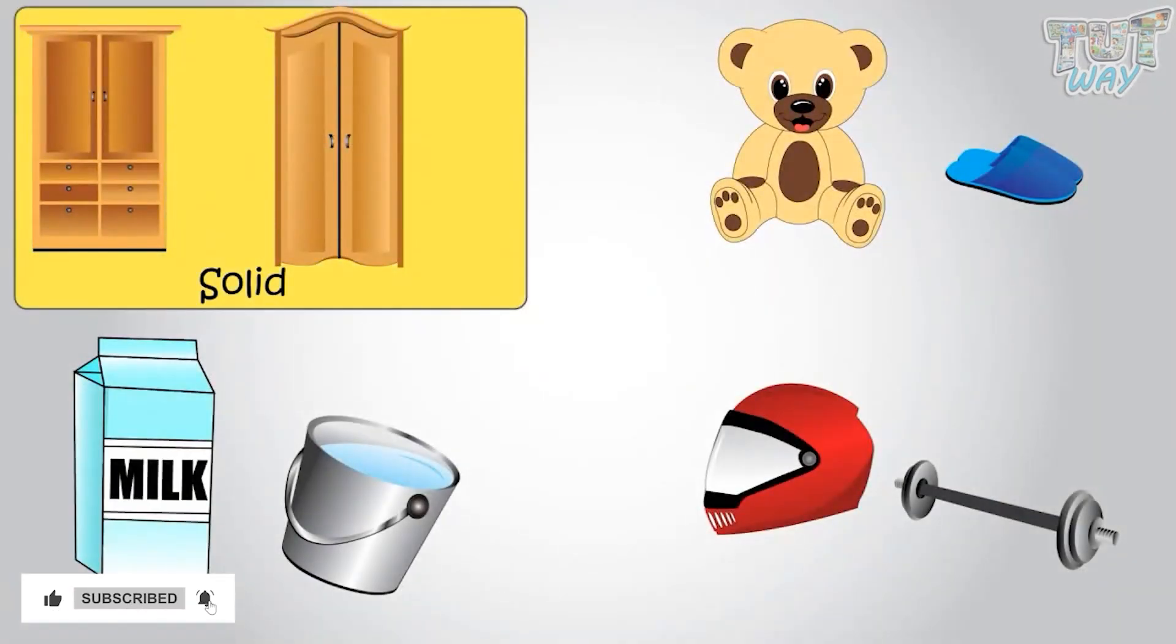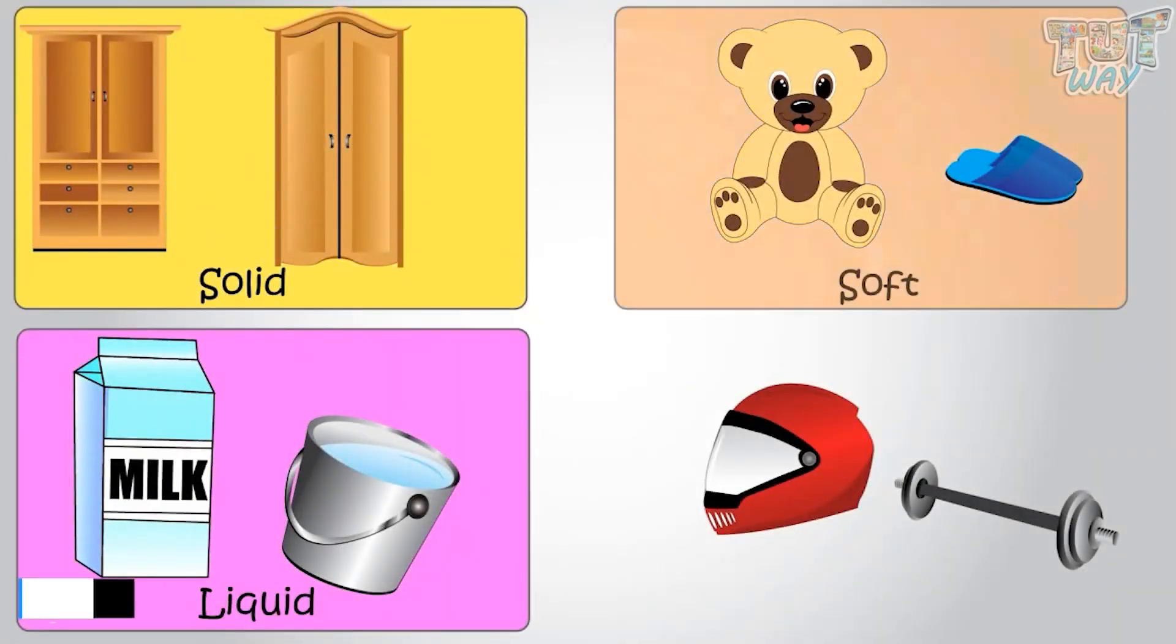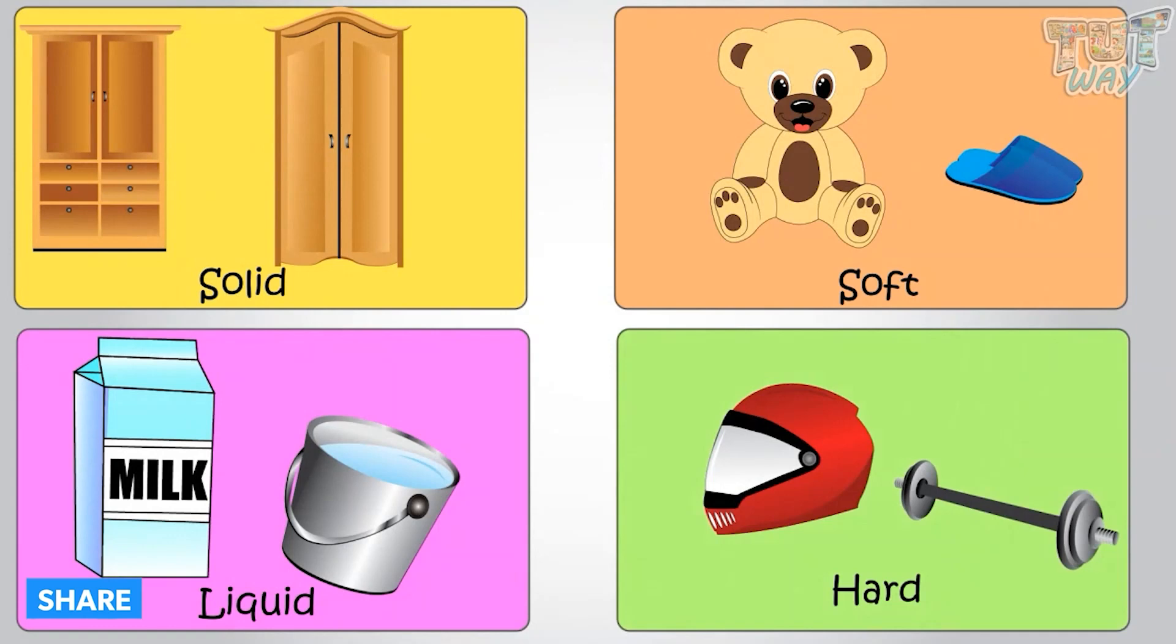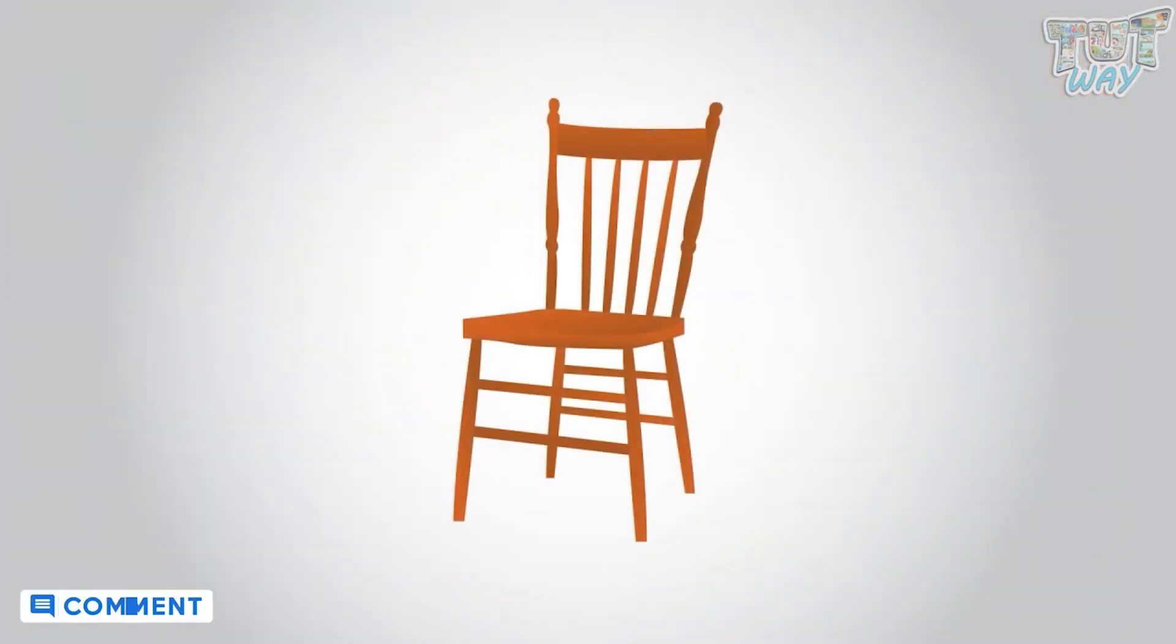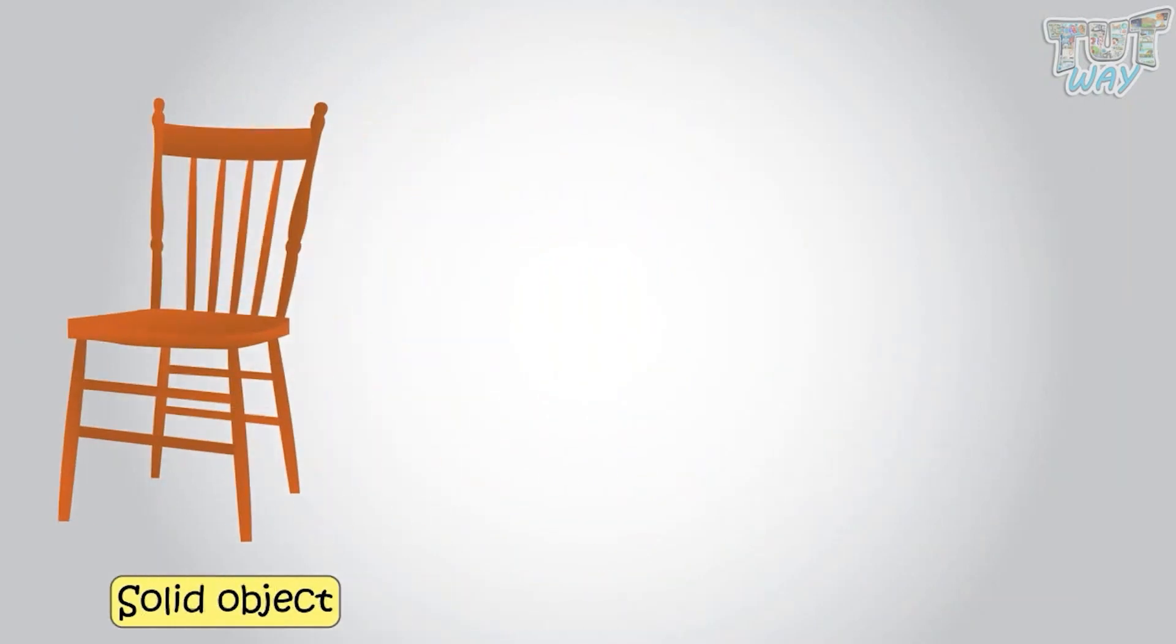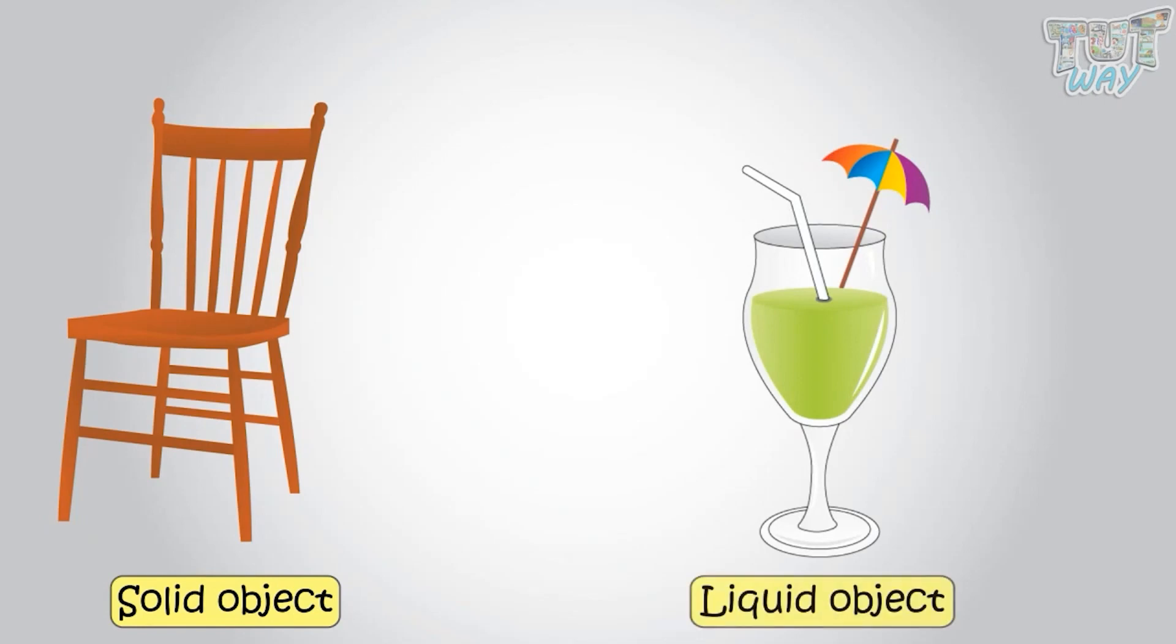We have a lot of things at our home. Some are solid, some are liquid, some are soft, some are hard. Like this chair, this is a solid object. And what about this drink? This is a liquid object.